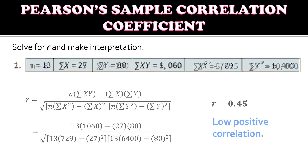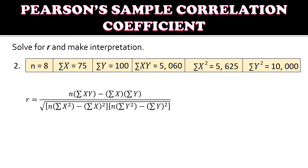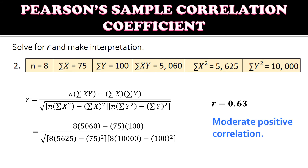Let's have another example. Solve for r again using the same formula, then substitute the given values. The computed r is 0.63. This is interpreted as a moderate positive correlation.